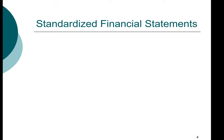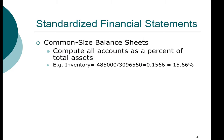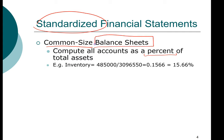The first item we want to introduce is the concept of standardized financial statements. Another term for standardized is common size. A common size financial statement essentially converts all the items in the financial statement into a percentage. For the balance sheet, we use total assets as the denominator — so basically, we divide each item by total assets.